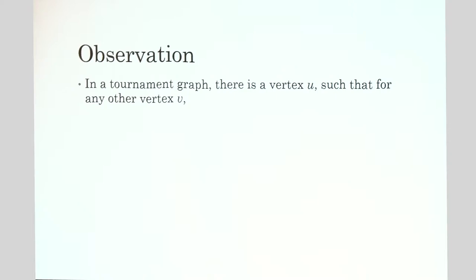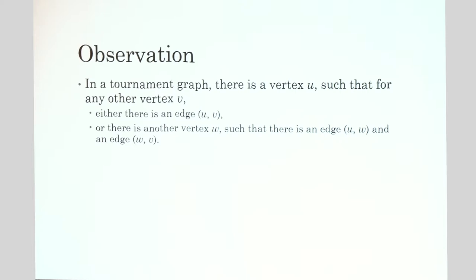Here's a key observation: in any tournament graph there is always a vertex U such that for any other vertex V, either there's an edge from U to V, or there exists some W with an edge from U to W and an edge from W to V. In other words, in any tournament graph there is a vertex that can reach any other vertex in one or two steps.